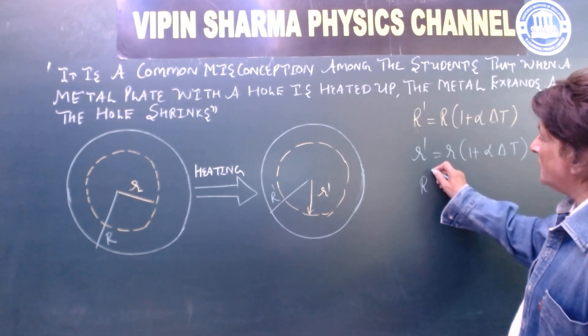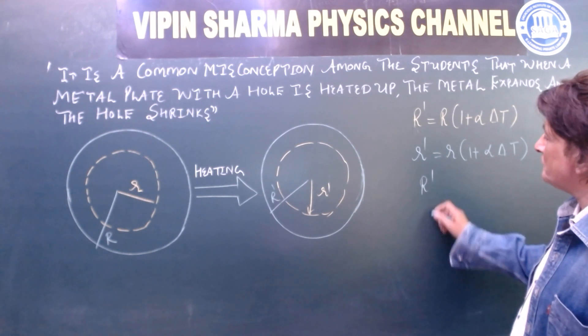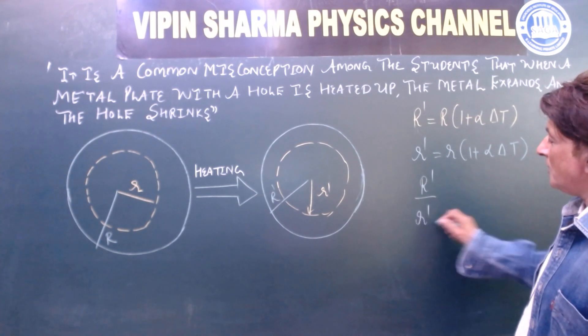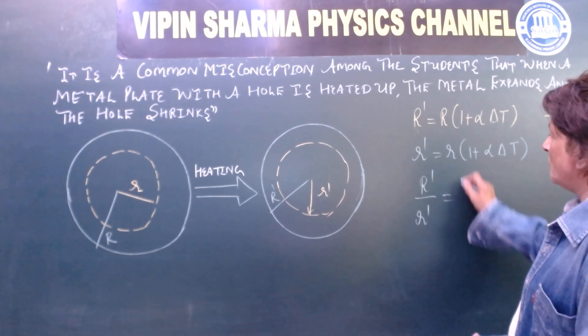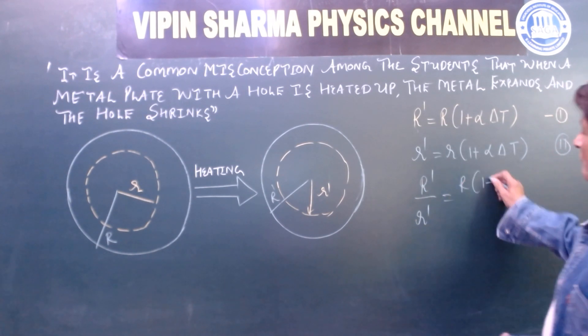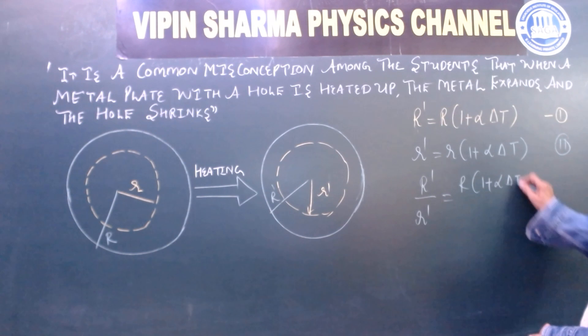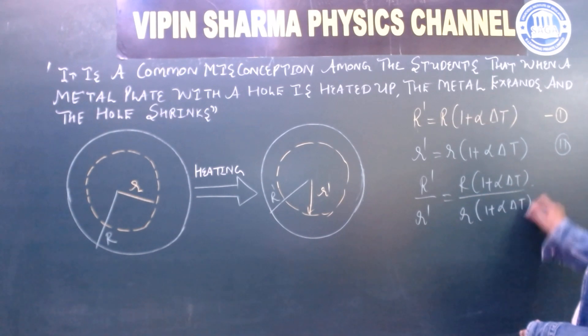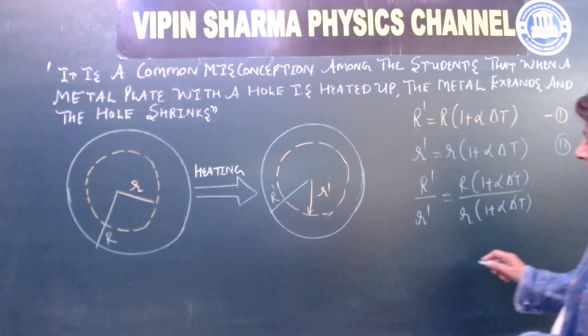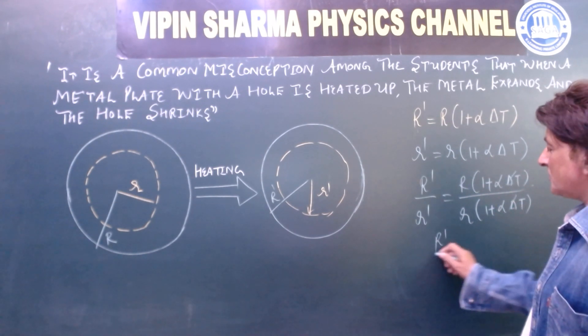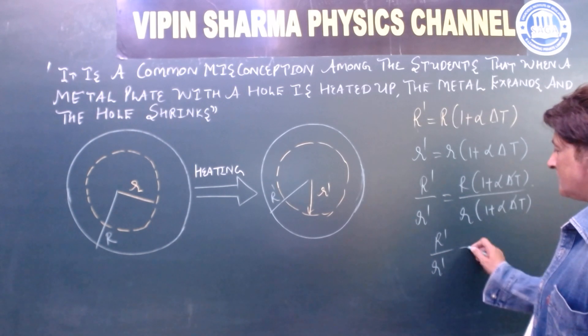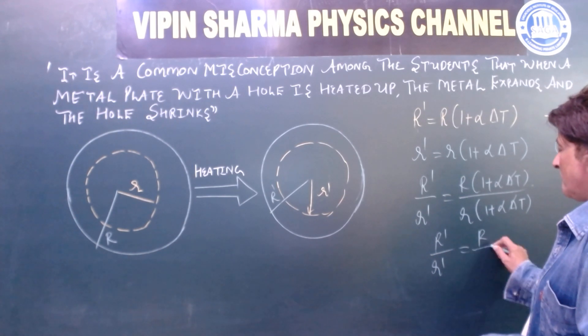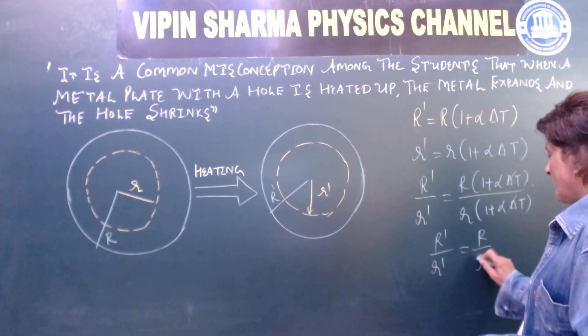Now we take ratio. R dash upon R equal to R 1 plus alpha delta t upon capital R 1 plus alpha delta t. This gets cancelled.